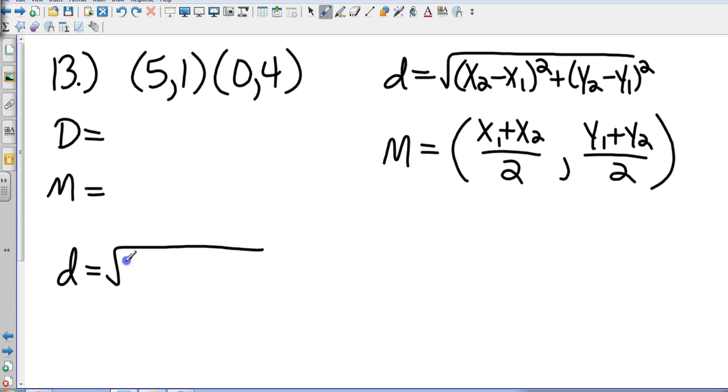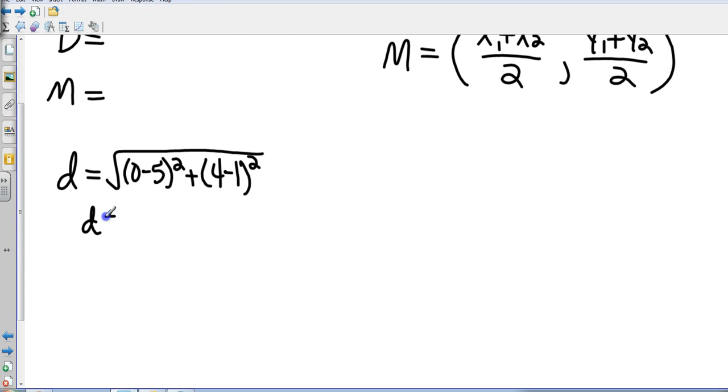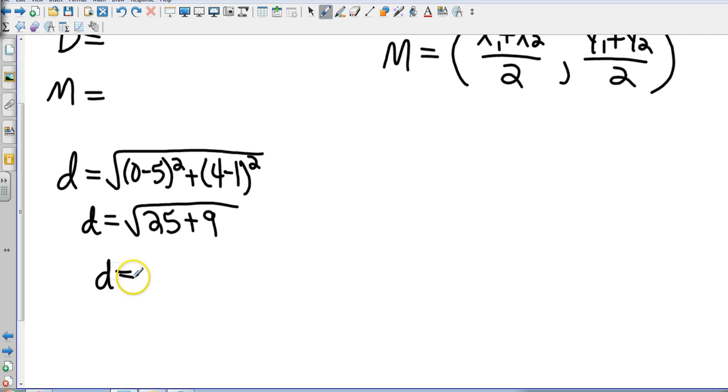x2 minus x1, that's going to be 0 minus 5 squared plus, now we're going to take y2 minus y1, that's going to be 4 minus 1 squared. That's going to give me 0 minus 5 is negative 5, and that squared is going to be 25. 4 minus 1 is 3, and that squared is going to be 9. So, that gives me a distance of the square root of 34.